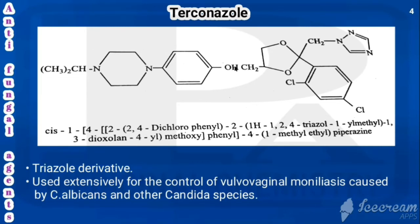In terconazole, the methoxy oxygen is directly as OCH2 with no extra hydrogen. It is a triazole derivative used extensively for the control of vulvovaginal moniliasis caused by Candida albicans and other Candida species.